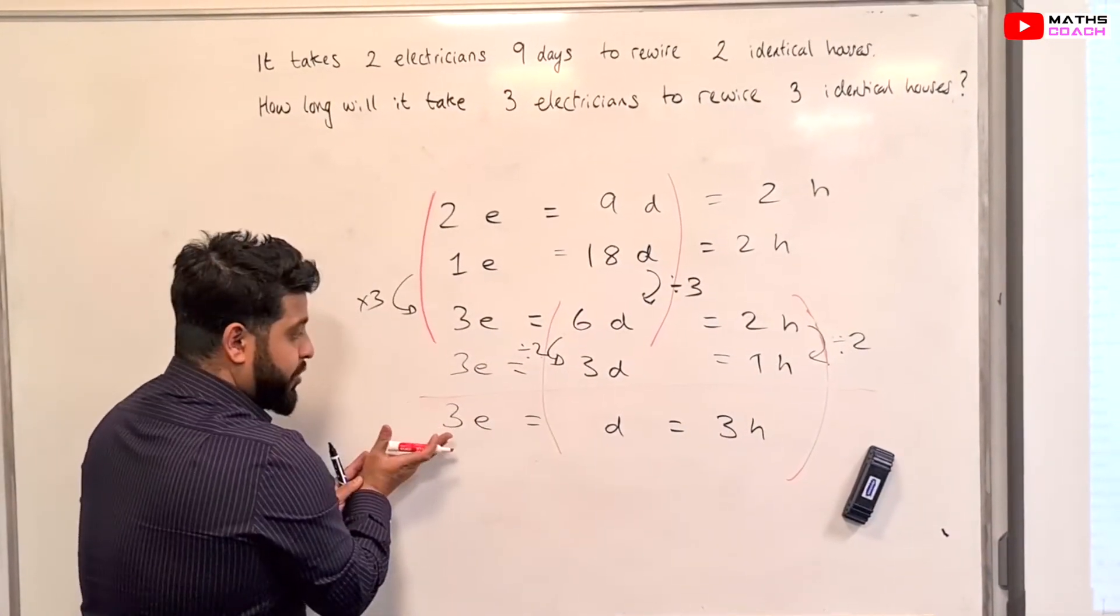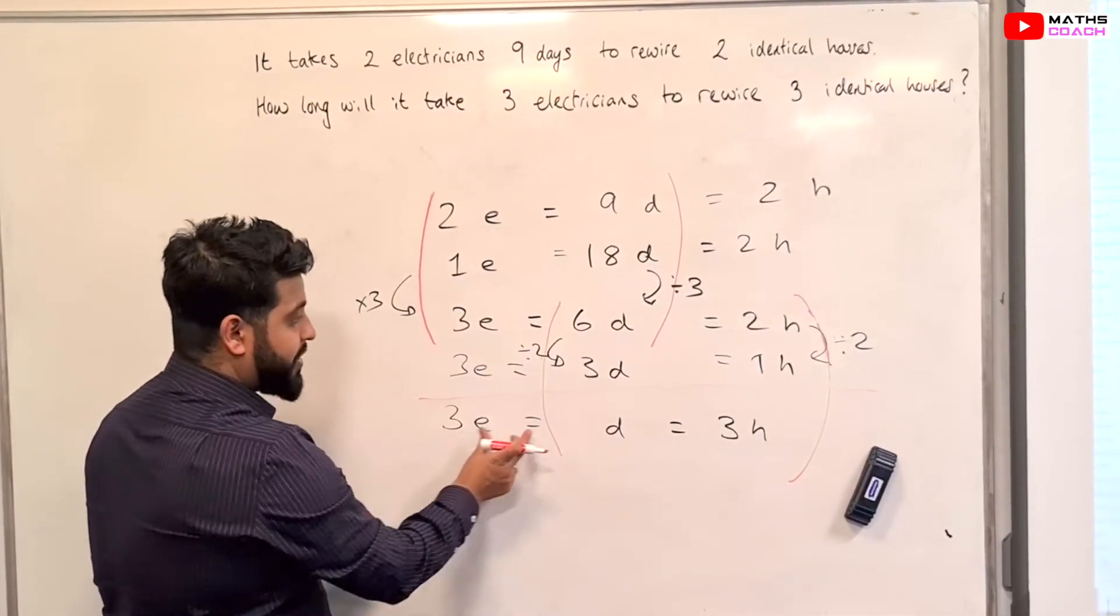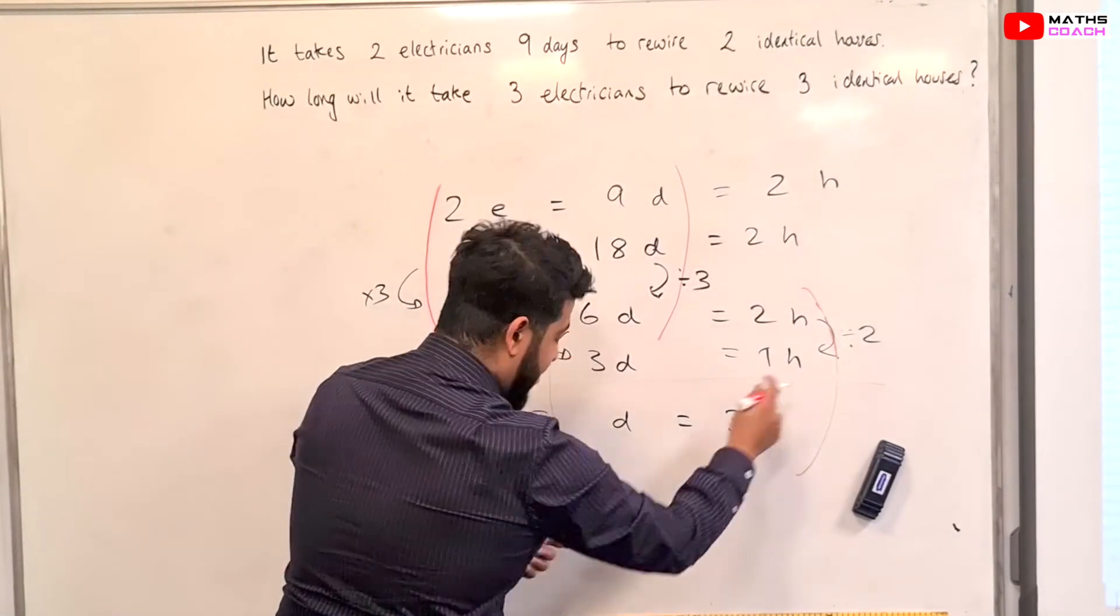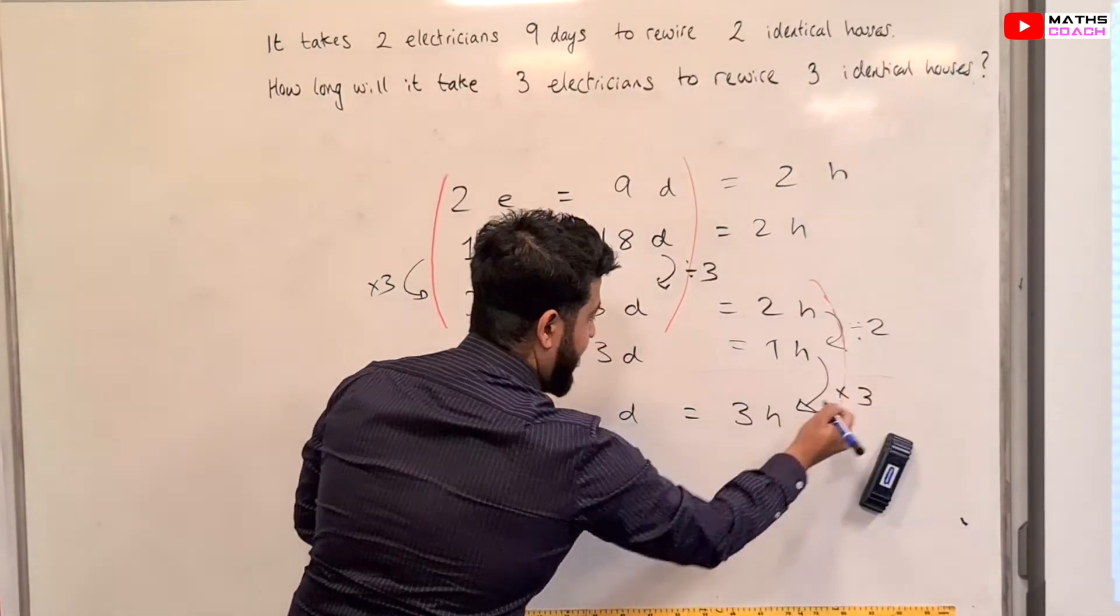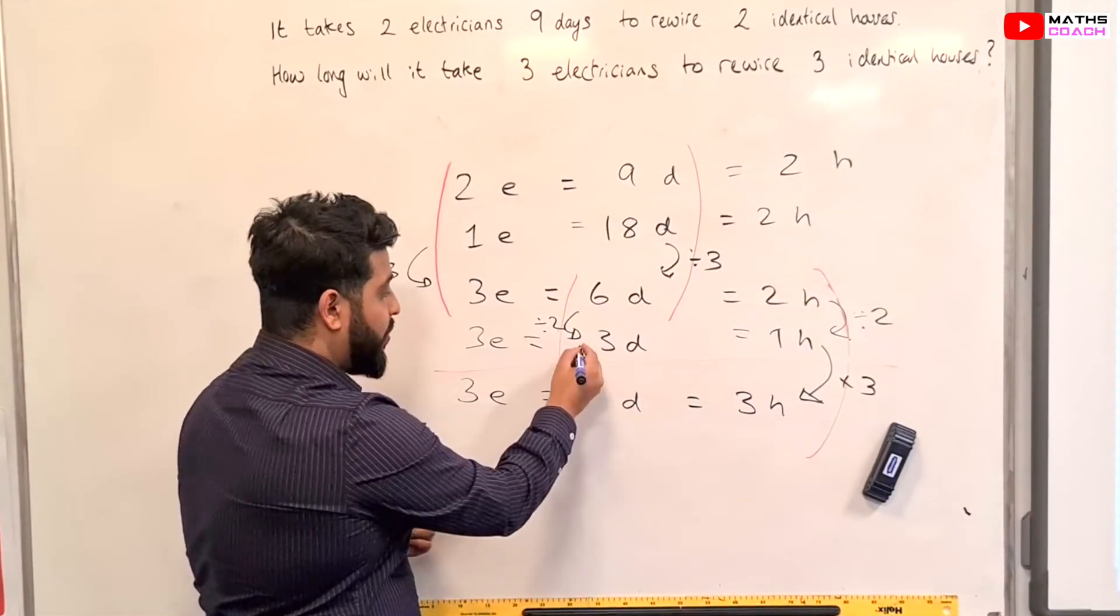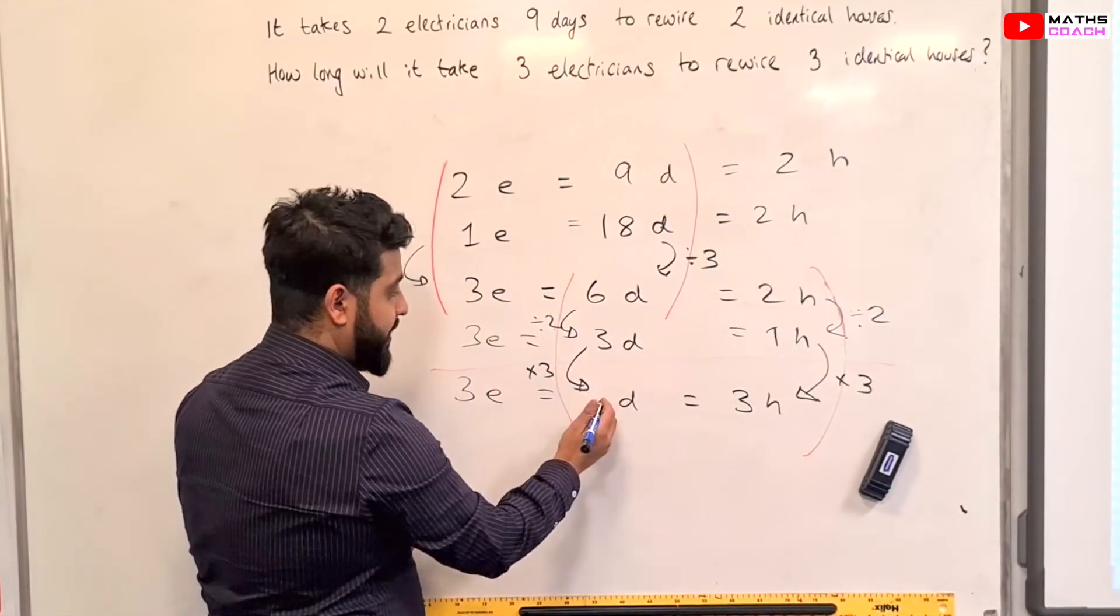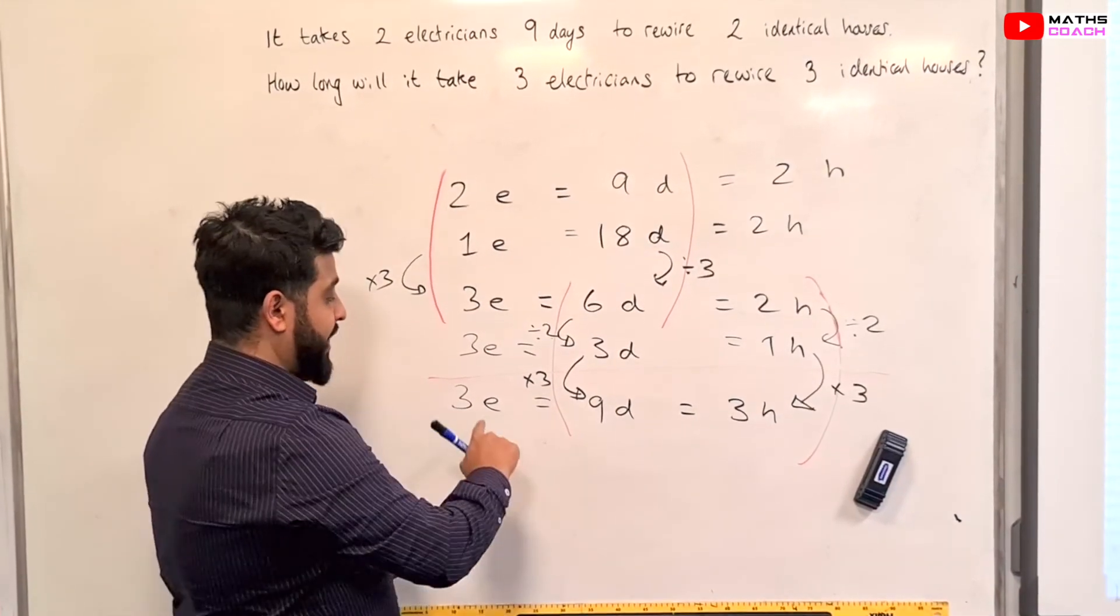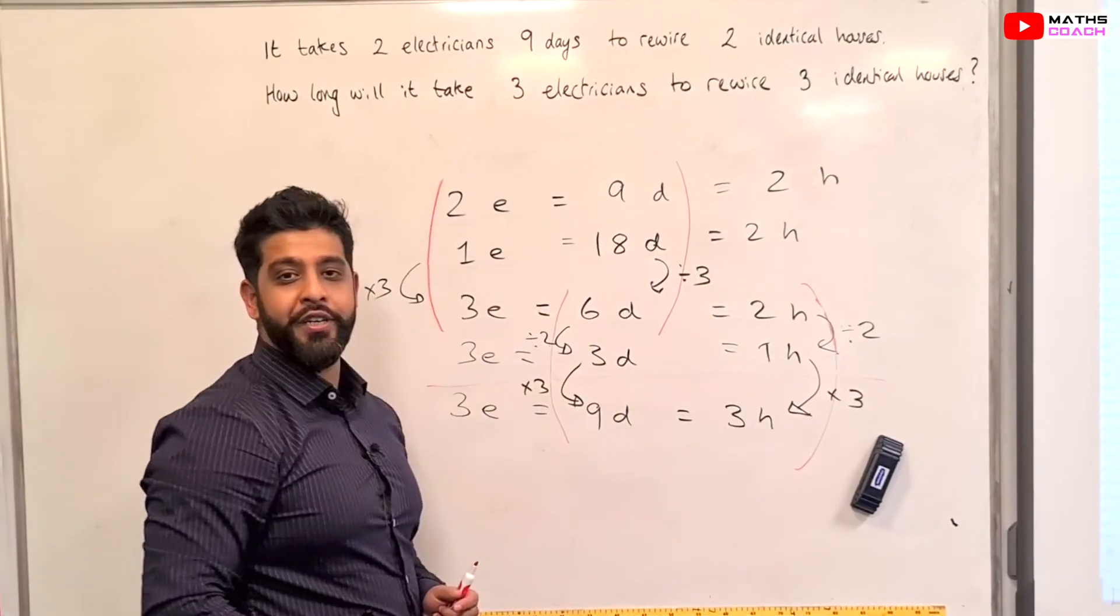Now, all it leaves us to do is the final step. So, 3 electricians, how long does it take them to rewire 3 houses? We go from 1 house, we multiply this by 3. And because the relationship is direct, we can also multiply this by 3. So, 3 times 3 is equal to 9 days. So, it takes 3 electricians, 9 days to rewire 3 houses.